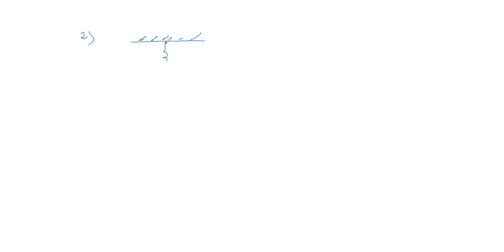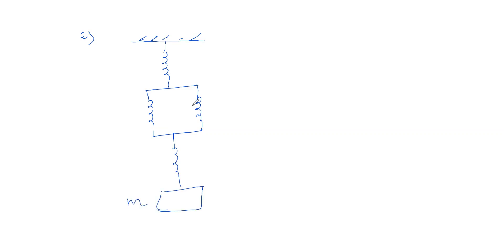Now let us solve the second problem. Here one spring is connected to a root, then two springs are connected in parallel, then one more spring is connected, and finally a block is attached. Each spring force constant is k. What is the effective force constant of the system?